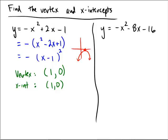On the other hand, let's do this in another way on the right. On the right, you might notice that a equals negative 1, b equals negative 8, and c equals negative 16.